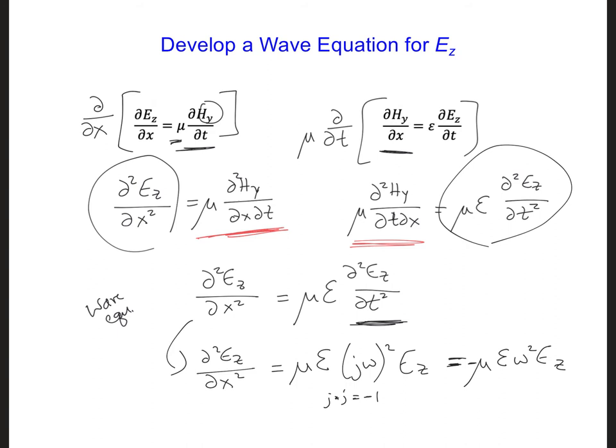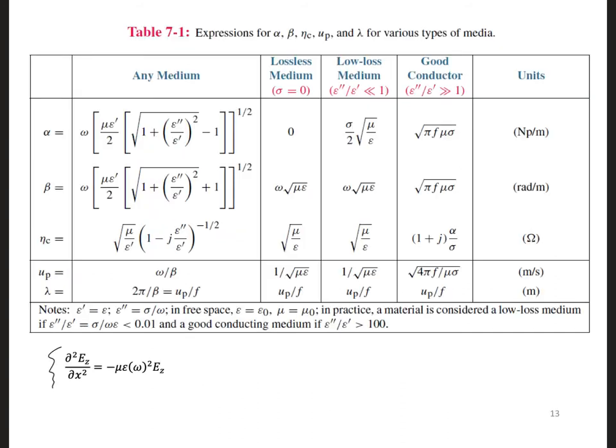Let's see if we can simplify this coefficient here, mu epsilon omega squared. Here's our equation we came up with on the previous slide. And looking at table 7-1 here, the phase velocity, which in this class we've been calling v, is equal to 1 over square root of mu epsilon in free space.